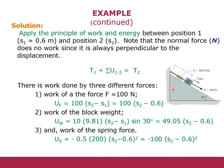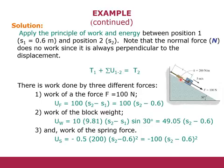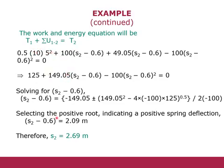Using the work-energy equation T1 + ΣU = T2, we calculate initial and final kinetic energies and the work done by all three forces. The 100 N force acts in the positive direction of displacement, so its work is positive: W = 100 × S2. We also calculate work done by the weight and the spring force — the spring force work is negative because it acts opposite to the displacement. Substituting all values into the equation gives the answer: S = 2.69 meters.